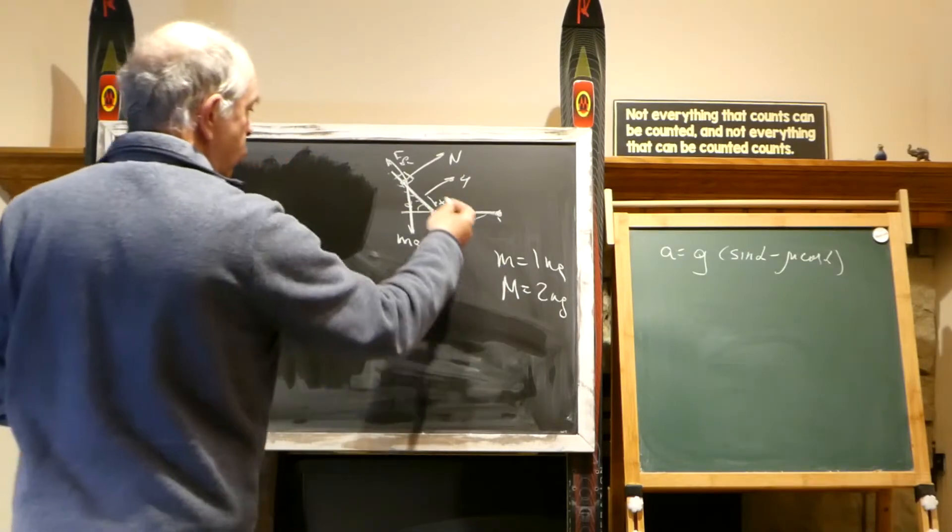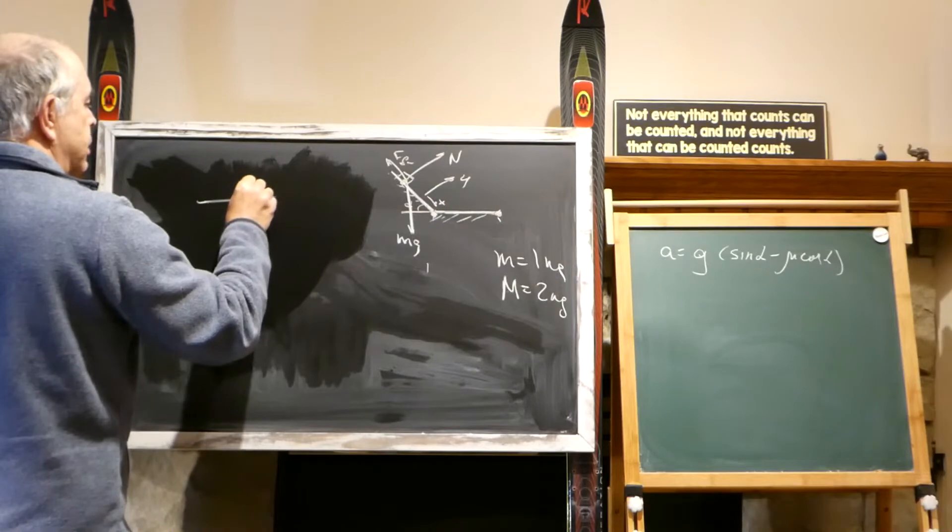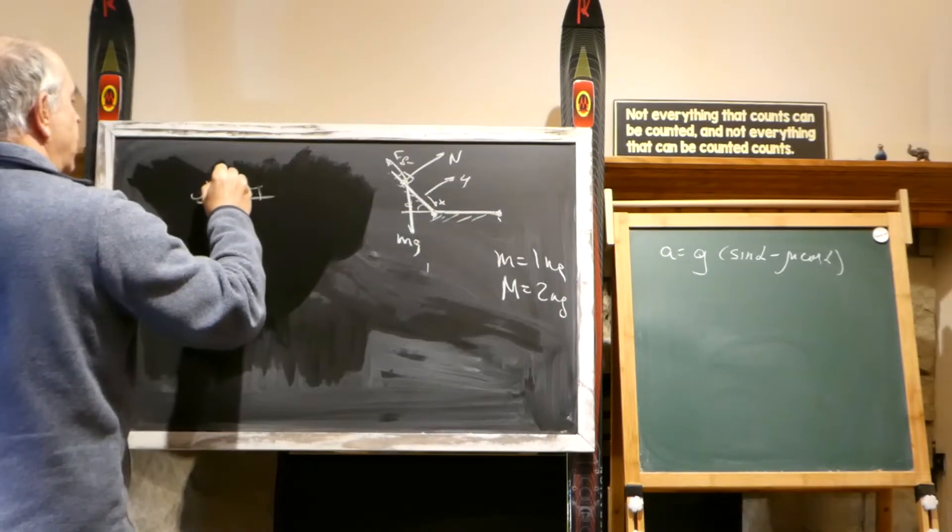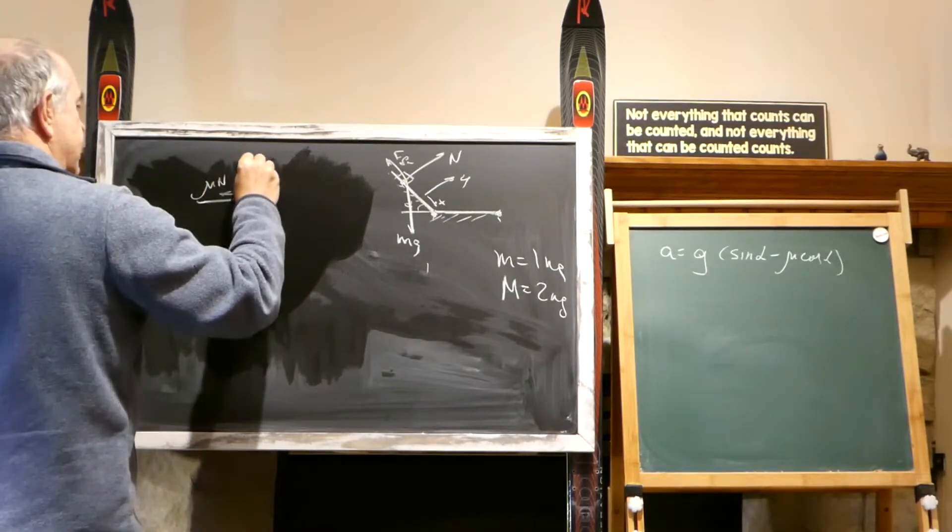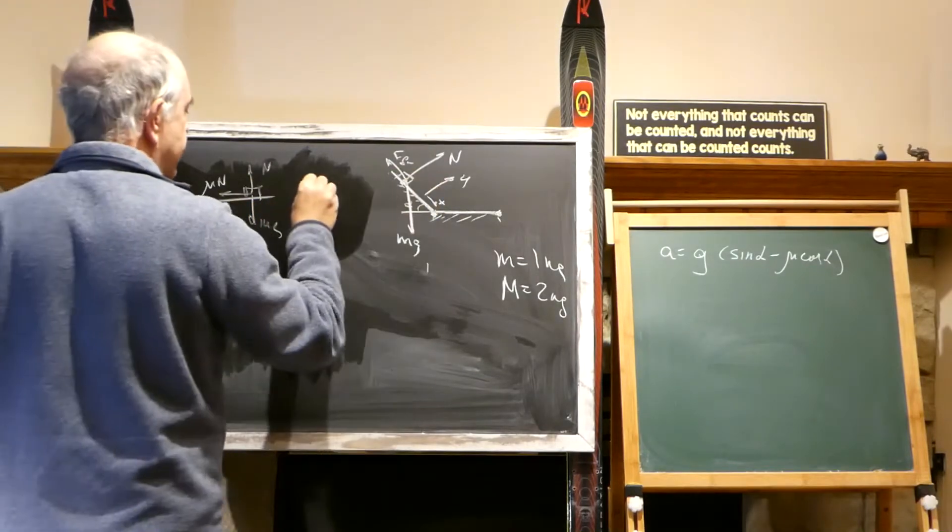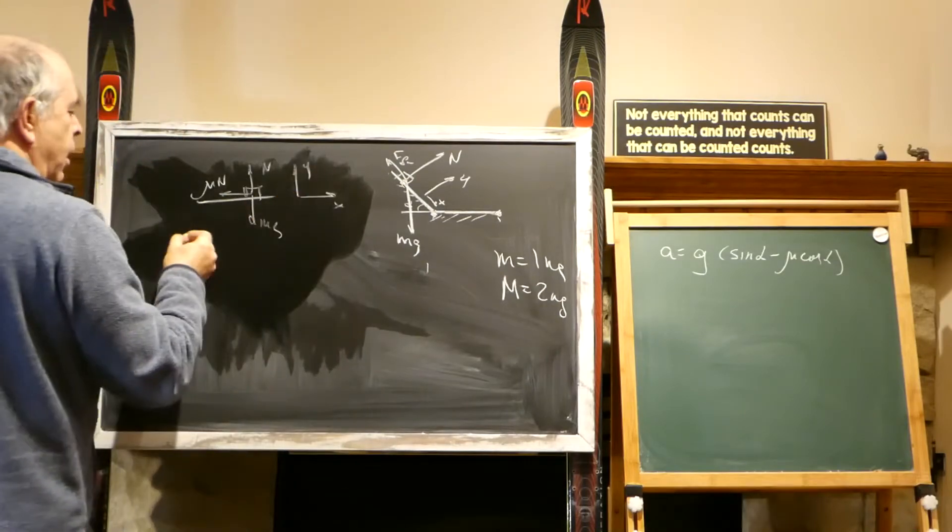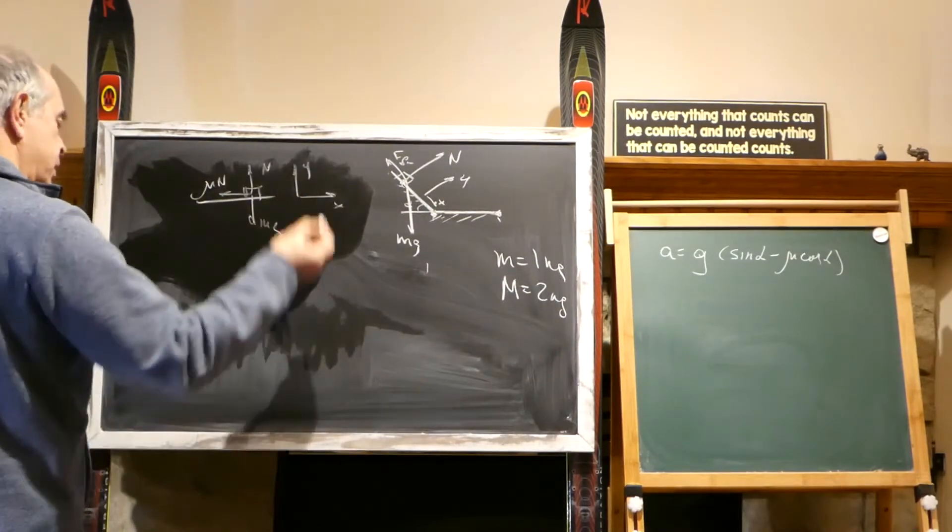Now let's look at this body on this surface. When this body is on this surface, there is only mu N, and there is N, and there is MG, and our axis would be X here, and Y here, and our second law of motion in projections.